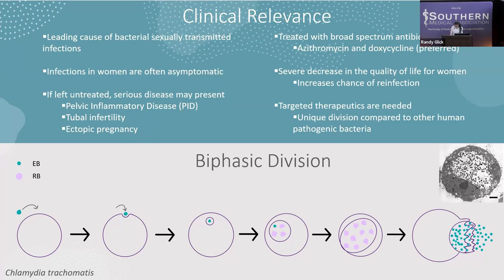As the inclusion matures, the reticulate bodies can continue to multiply and begin to condense and reorganize back into elementary bodies around 24 hours post-infection. Eventually, the inclusion's increasing size causes the cell and the inclusion to lyse, which releases the infectious elementary bodies to go and infect another cell.